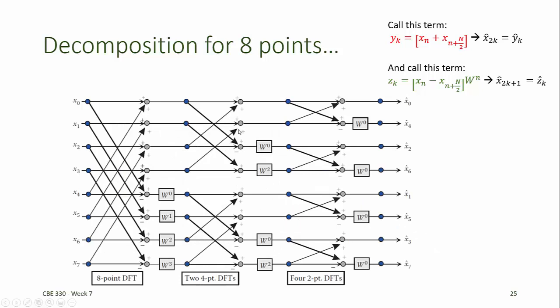This is accomplished by again performing the decomposition of the y values and the decomposition of the z values using the same structure. Only now we have two separate data sets, each containing only four points. Those are decomposed to two data sets, each containing two points, which are subsequently decomposed to individual sets of data points.